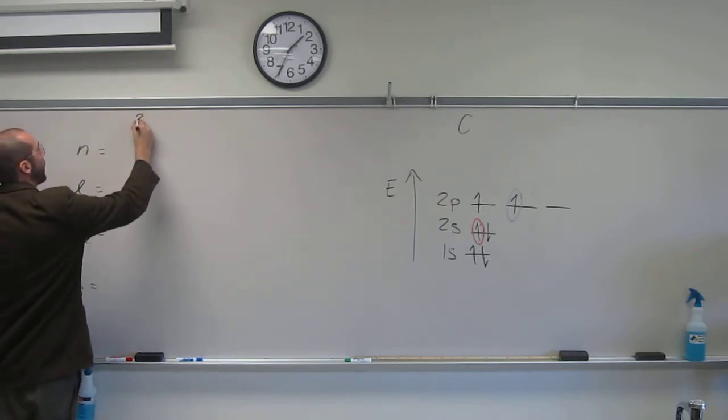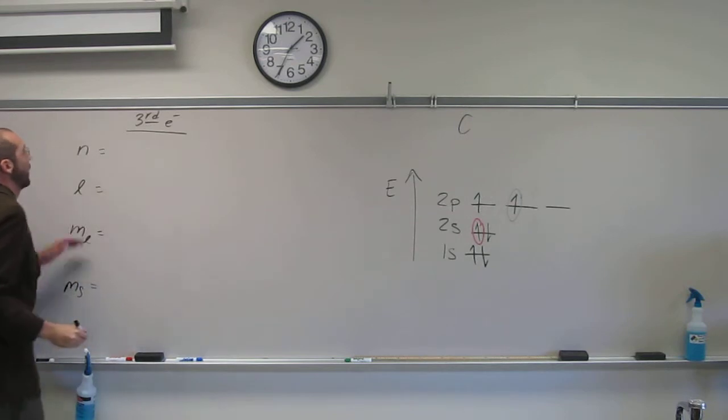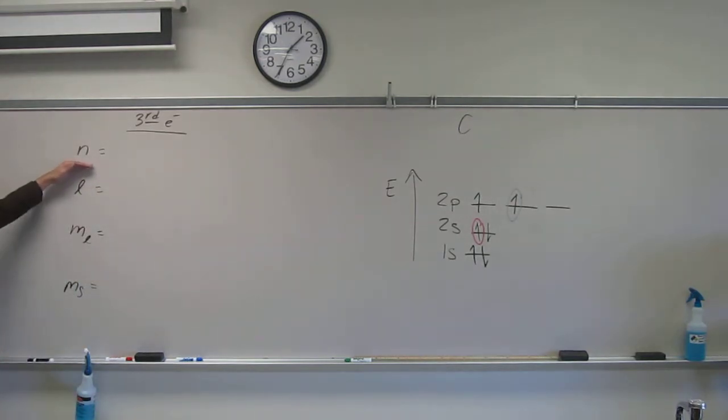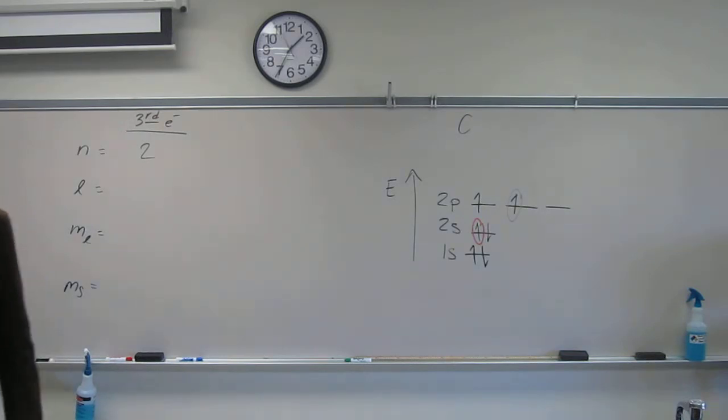So the third electron, its principal quantum number is going to be what, guys? You guys can help me out, two, right? So what did we say? If it's an s orbital, its angular momentum is going to be what? Zero.